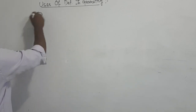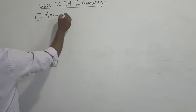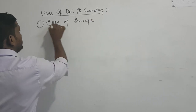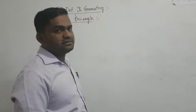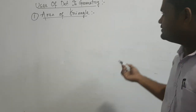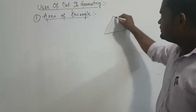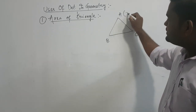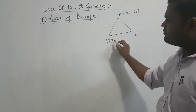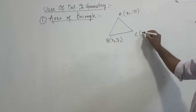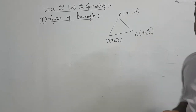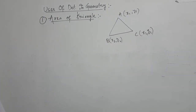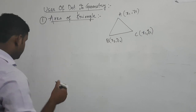The first use is the area of a triangle. Let triangle ABC be a triangle having vertices with coordinates x1, y1; x2, y2; and x3, y3.